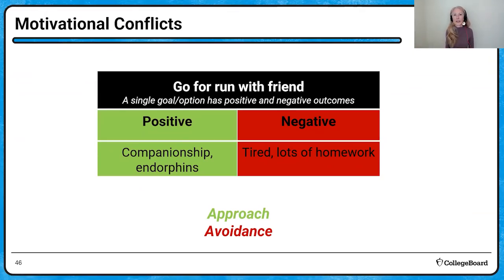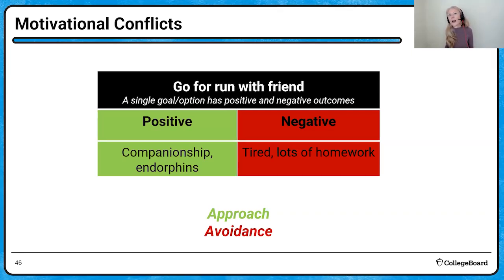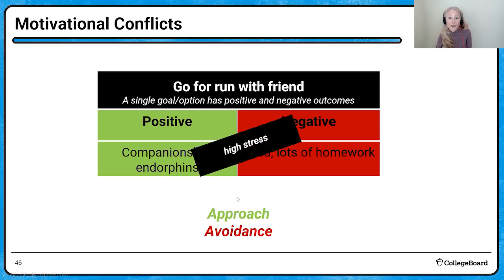Approach-avoidance is a single goal or option that has both positive and negative outcomes. For example: going for a run with your friend — the positive is companionship, increased endorphins, it's good for you; but the negative is that you have so much work, you're tired, and you don't really have time. That's a conflict, and it can cause quite a bit of stress.